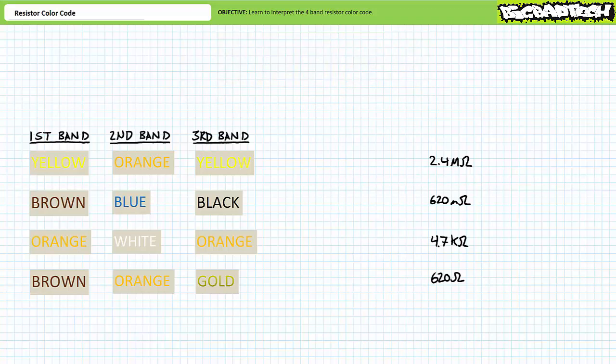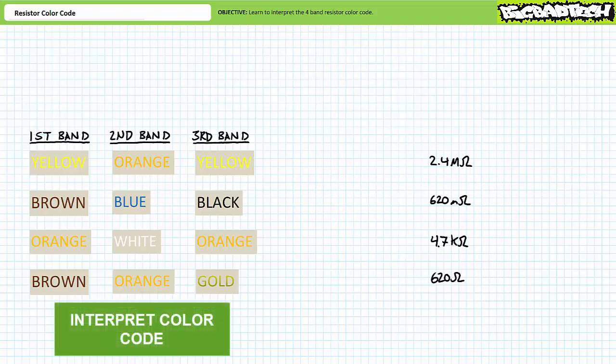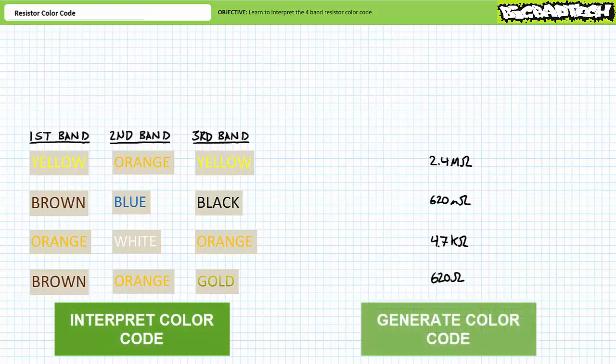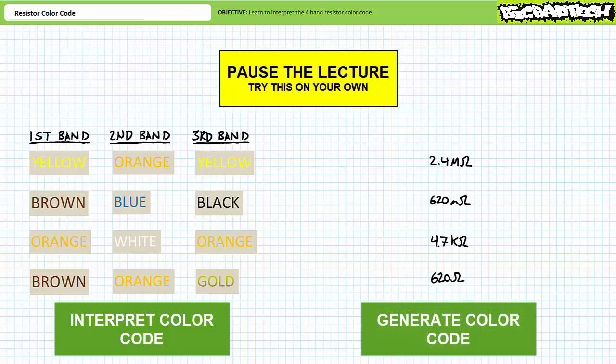You are on your own now. Again, for the first set of resistors on the left, interpret the first three bands of the resistor color code and express the resistance values in proper engineering format. And for the second set of resistors on the right, determine the colors in the first three bands. By all means, pause the lecture and try this on your own. If you're tracking, you should have obtained the following results.